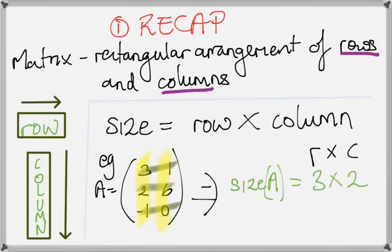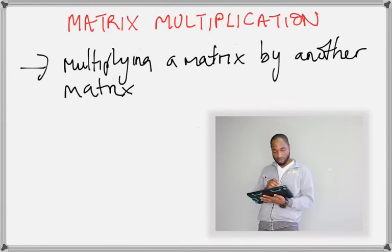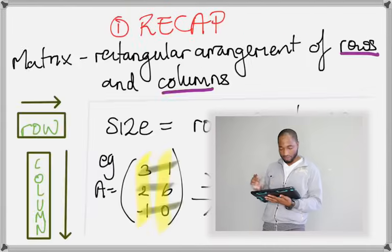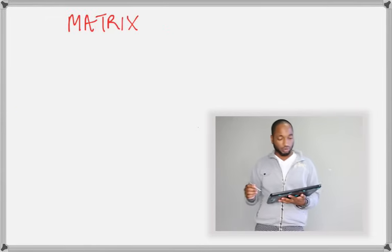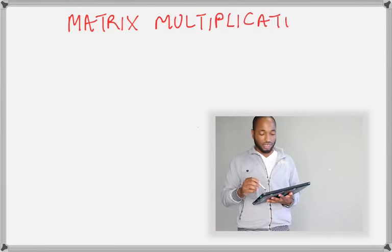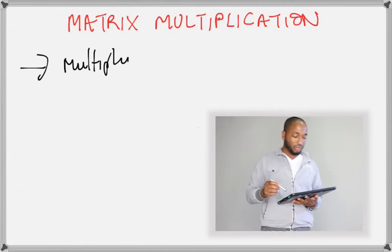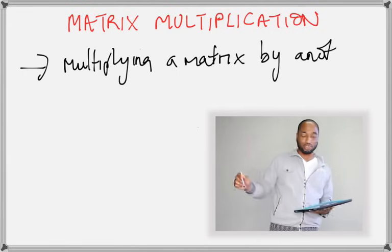Write the rows first — write the rows first, people. So, moving on to matrix multiplication. The definition: multiplying a matrix by another matrix.